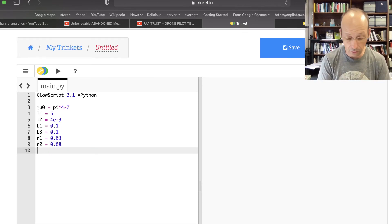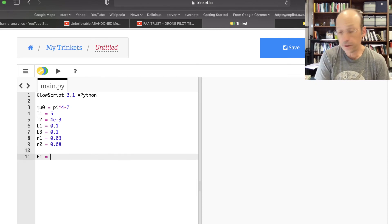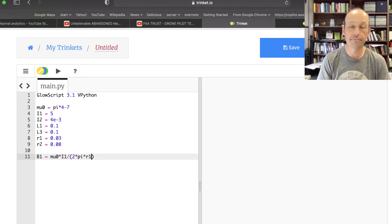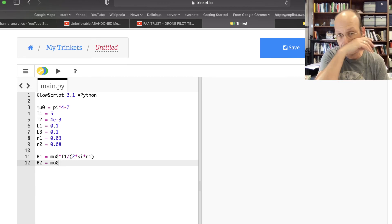So now I can do this. I need B1 first. B1 equals mu 0 times I1 divided by 2 times pi times R1. I don't even need to calculate that. I'm really just writing out the expression just like I would normally see it. That's why Python is so awesome. B2 equals mu 0 times I1 divided by 2 times pi times R2.